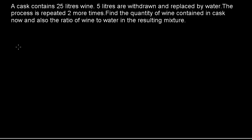Hi friends, welcome to today's class. Today's question is: a cask contains 25 details of wine, 5 details are withdrawn and replaced by water. The process is repeated 2 more times. Find the quantity of wine contained in the cask now, and also the ratio of wine to water in the resulting mixture.